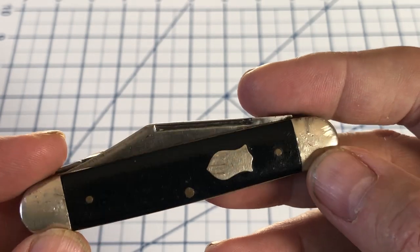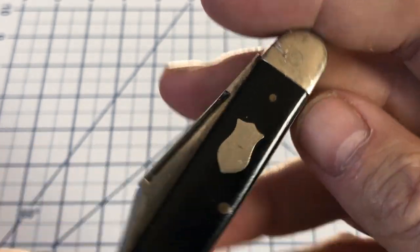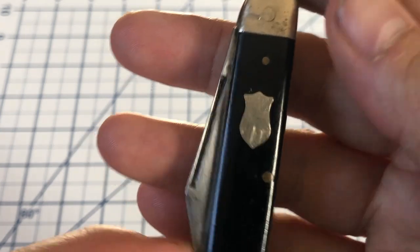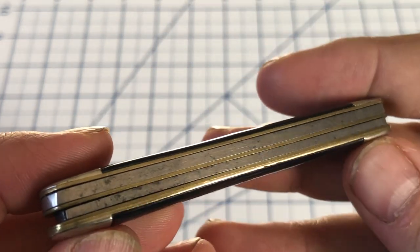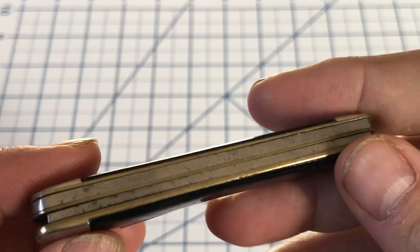Nickel-silver bolsters and a nickel-silver shield. Brass liners. Two back springs.